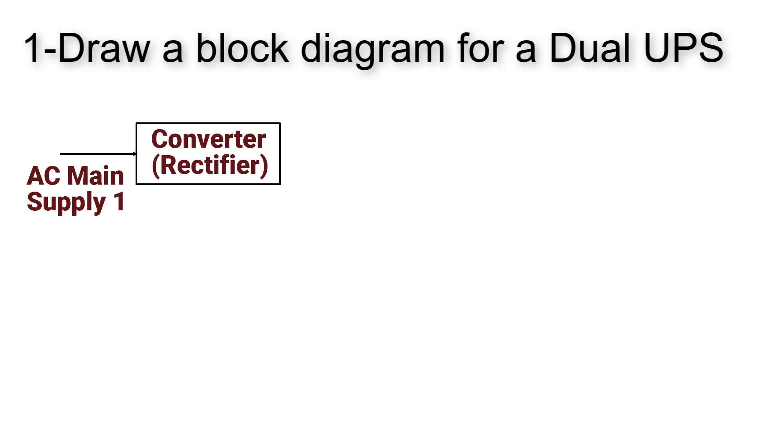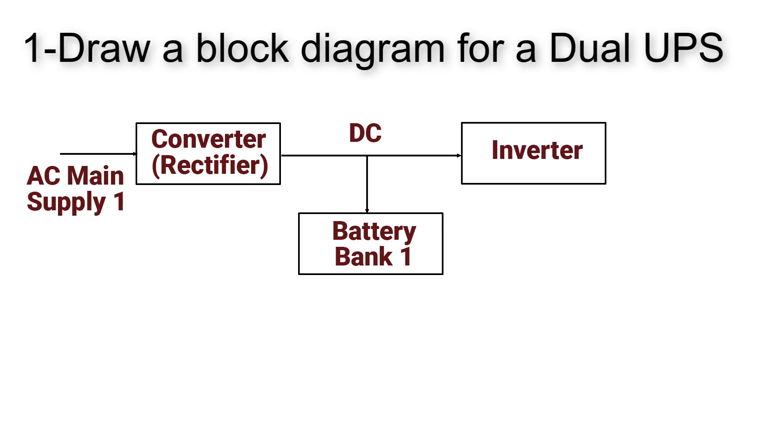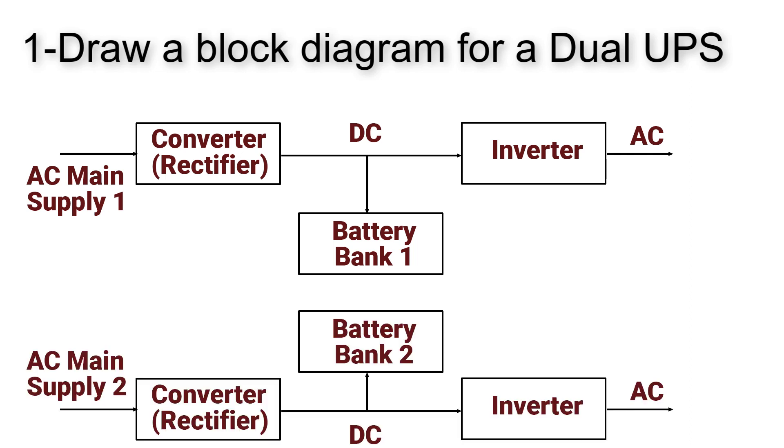Here we will connect the output of converter to a battery bank to charge the batteries. Then we will connect the DC supply here to an inverter to convert DC into AC again to supply our critical load. Copy all what we did to have another UPS.